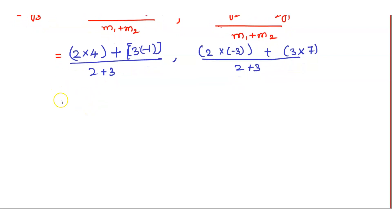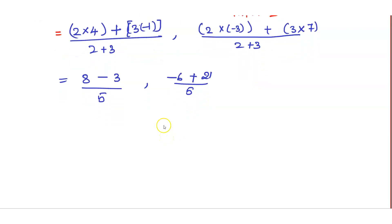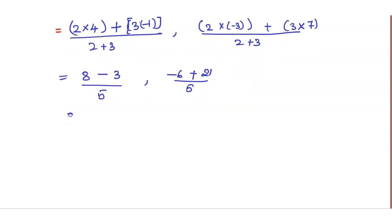So: 2 × 4 = 8, plus into minus is minus, 3 × 1 = 3, upon 2 + 3 = 5. Then 2 × (-3) = -6, plus 3 × 7 = 21, divided by 5. So 8 - 3 = 5 upon 5, and -6 + 21 = 15 upon 5.